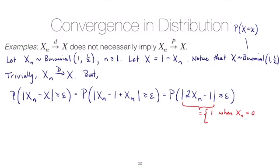The other case: when Xn = 1, we get 2(1) - 1 = 1, and in absolute value that's again 1. So overall what we see is this probability is just equal to the probability that 1 ≥ ε.